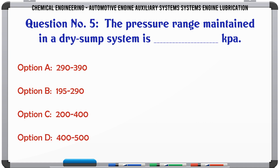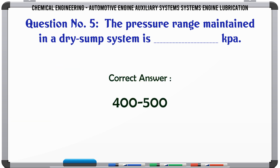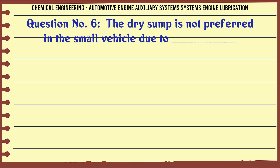The pressure range maintained in a dry sump system is (kPa): a) 200-390, b) 195-290, c) 200-400, d) 400-500. The correct answer is 400-500.